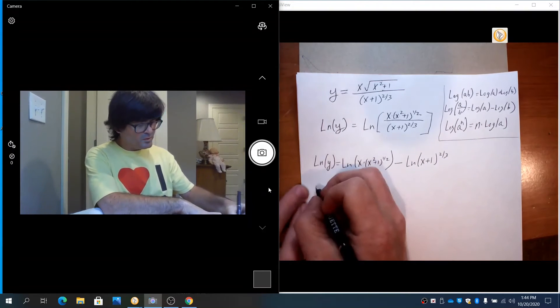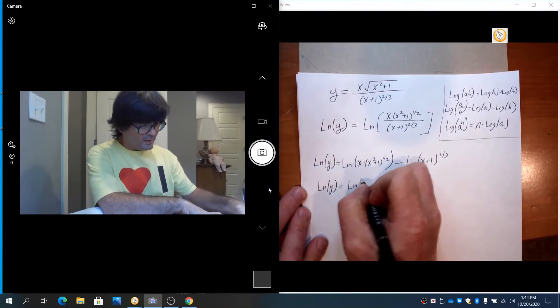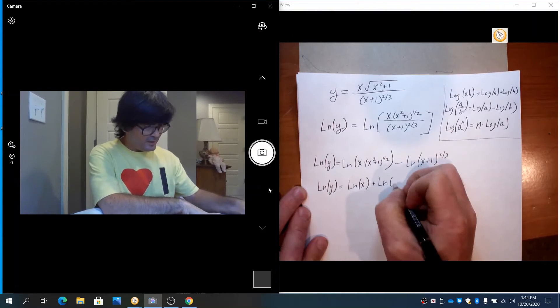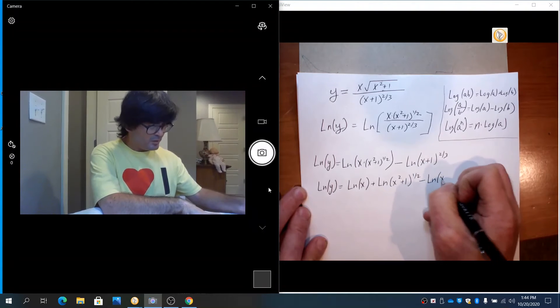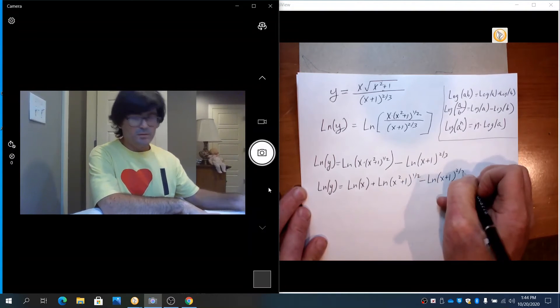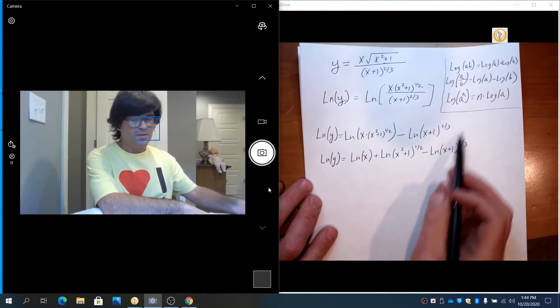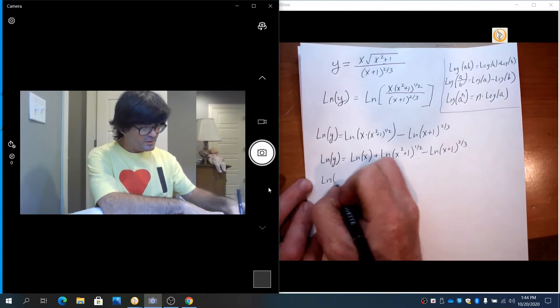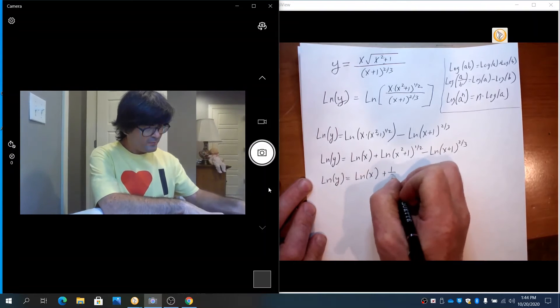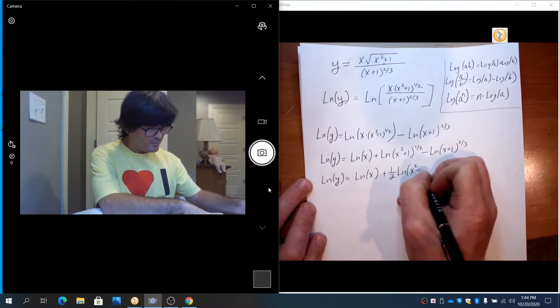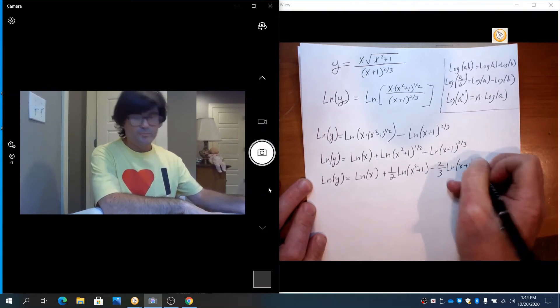Here we've got multiplication so we'll just keep rolling. Natural log of y is natural log of x plus natural log of x squared plus 1 to the 1 half minus natural log of x plus 1 to the 2 thirds. Now I also have exponents. I'll use my third log property to bring that down, and then we'll stop for a minute and reflect on what to do next. So natural log of y is natural log of x plus 1 half log of x squared plus 1 minus 2 thirds log of x plus 1.